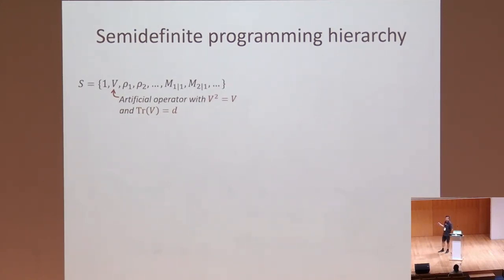The idea is that you introduce a list of operators that appear in your physical problem. You have the identity, you have all the states you're creating, you have all the measurements that Bob is implementing, but on top of that, you also give this artificial operator that doesn't physically exist in your problem. I call it V. V is going to get some suitable properties. It's a projector, and its trace is d. So if it's a projector with trace d, it is emulating that d-dimensional projector somewhere in the otherwise unlimited Hilbert space.